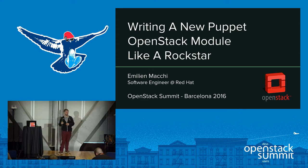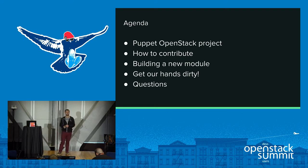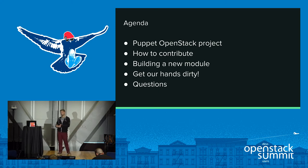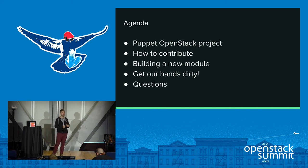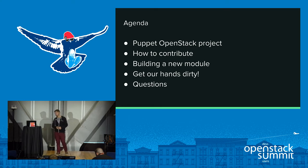This presentation is about how we write a Puppet module. Today we have a first introduction about the Puppet OpenStack project. I'll give some insight about what we do, what we deliver, and how you can get involved. I want to make sure you know how you can contribute, and I'll explain how we build new modules when a new project is created in OpenStack. We'll also have time for questions.